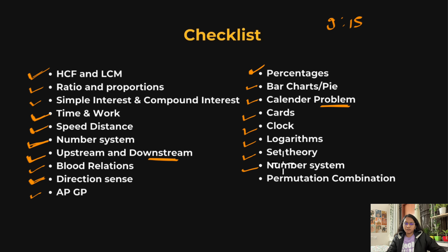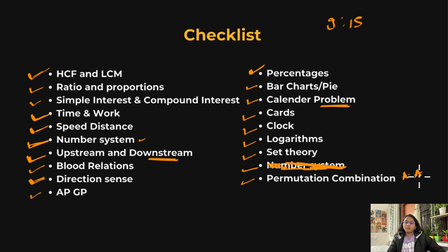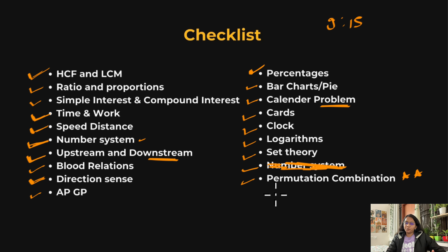Permutation, combination, and probability are very important — you must know these to solve aptitude questions. Practice a lot of questions from permutation, combination, and probability.